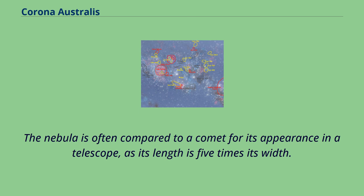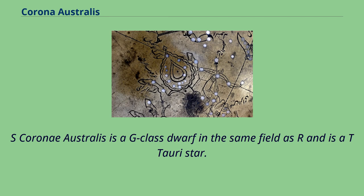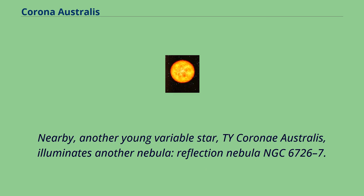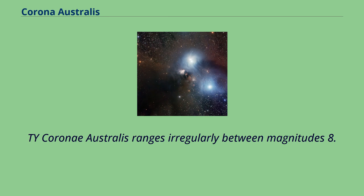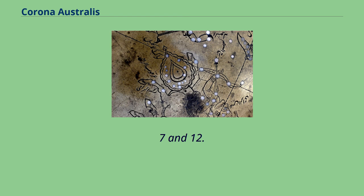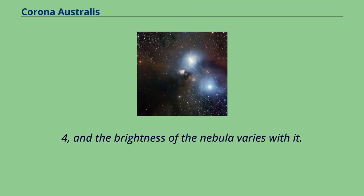S Corona Australis is a G-class dwarf in the same field as R and is a T Tauri star. Nearby, another young variable star, T Corona Australis, illuminates another nebula, Reflection Nebula NGC 6726-7. T Corona Australis ranges irregularly between magnitudes 8.7 and 12.4, and the brightness of the nebula varies with it. Blue-white, it is of spectral type B8e.